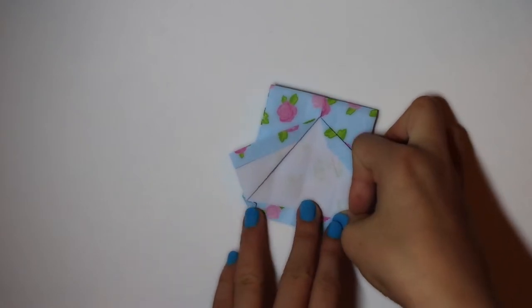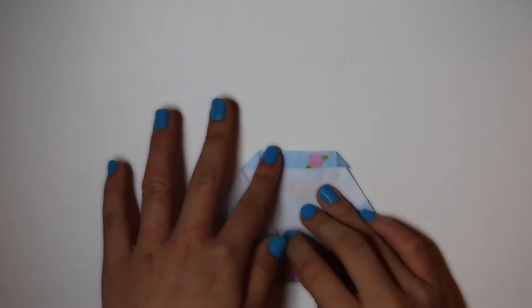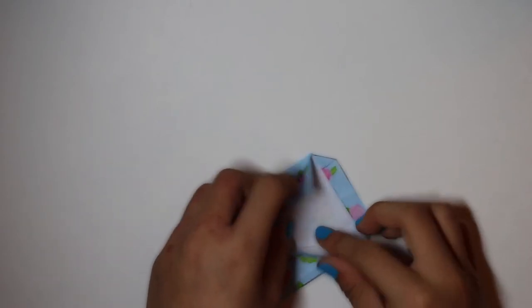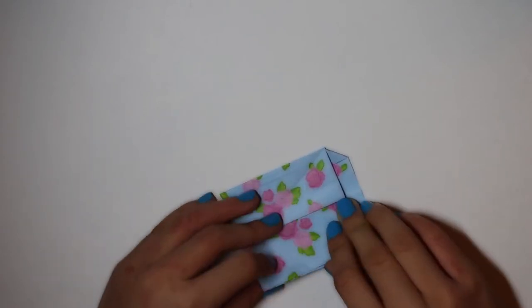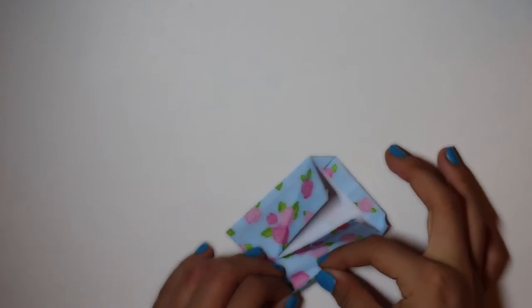Now, flip over your project. And fold it in half so there's a centimeter peeking through if you flip it over again. Now, with this centimeter, fold the outer corners in to make a triangle.